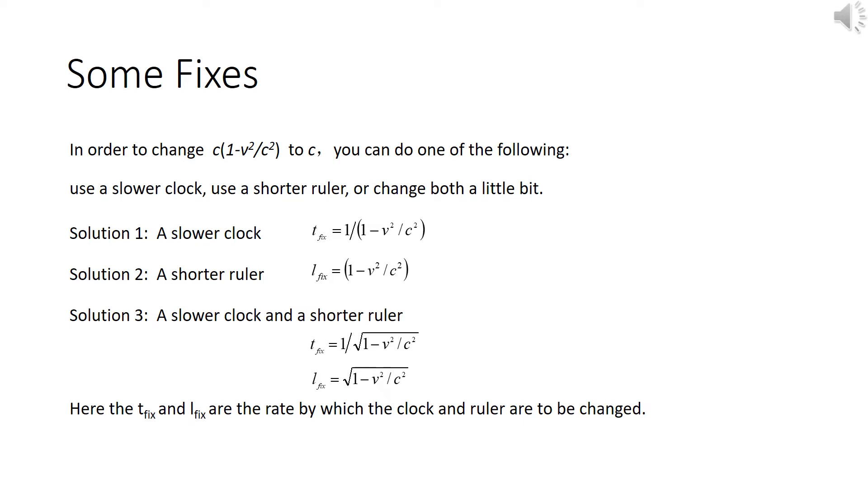Solution 1 would be using a slower clock, so t_fix would be equal to 1 divided by 1 minus V squared divided by C squared. Solution 2 would be a shorter ruler, so l_fix would be equal to 1 minus V squared divided by C squared. Solution 3 would be using a slower clock and a shorter ruler. So t_fix would be equal to 1 divided by square root of 1 minus V squared divided by C squared, and l_fix would be equal to square root of 1 minus V squared divided by C squared. In this scenario, the t_fix and l_fix are the rate by which the clock and ruler are to be changed.